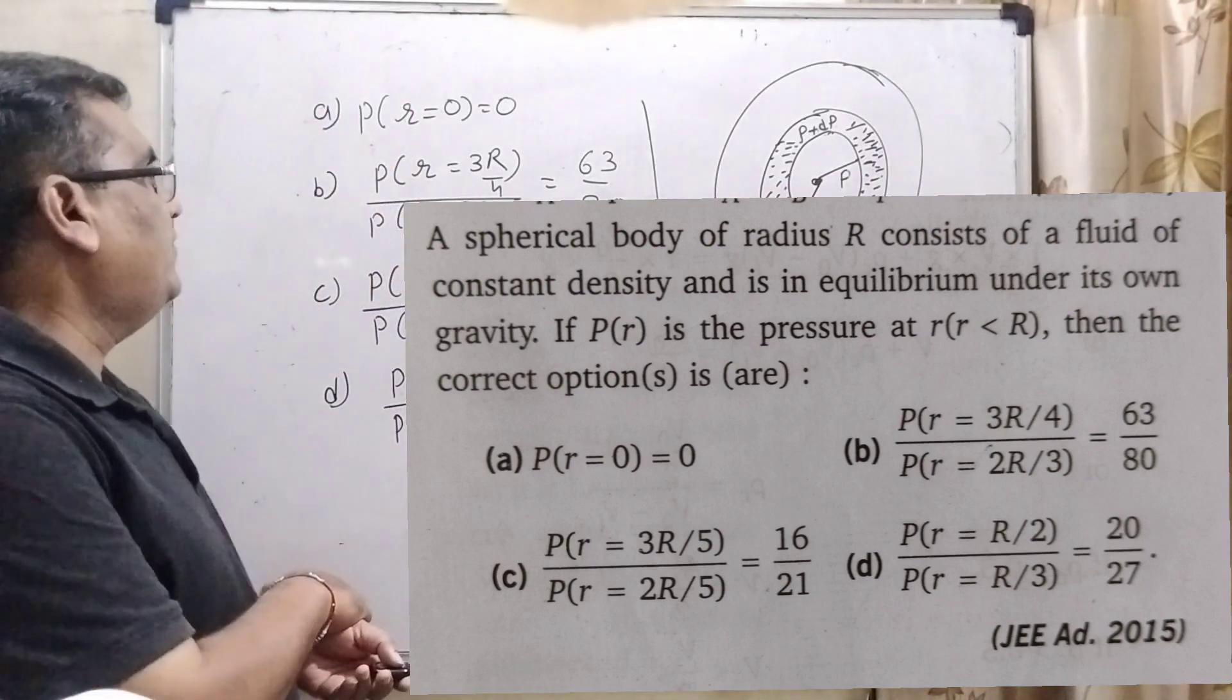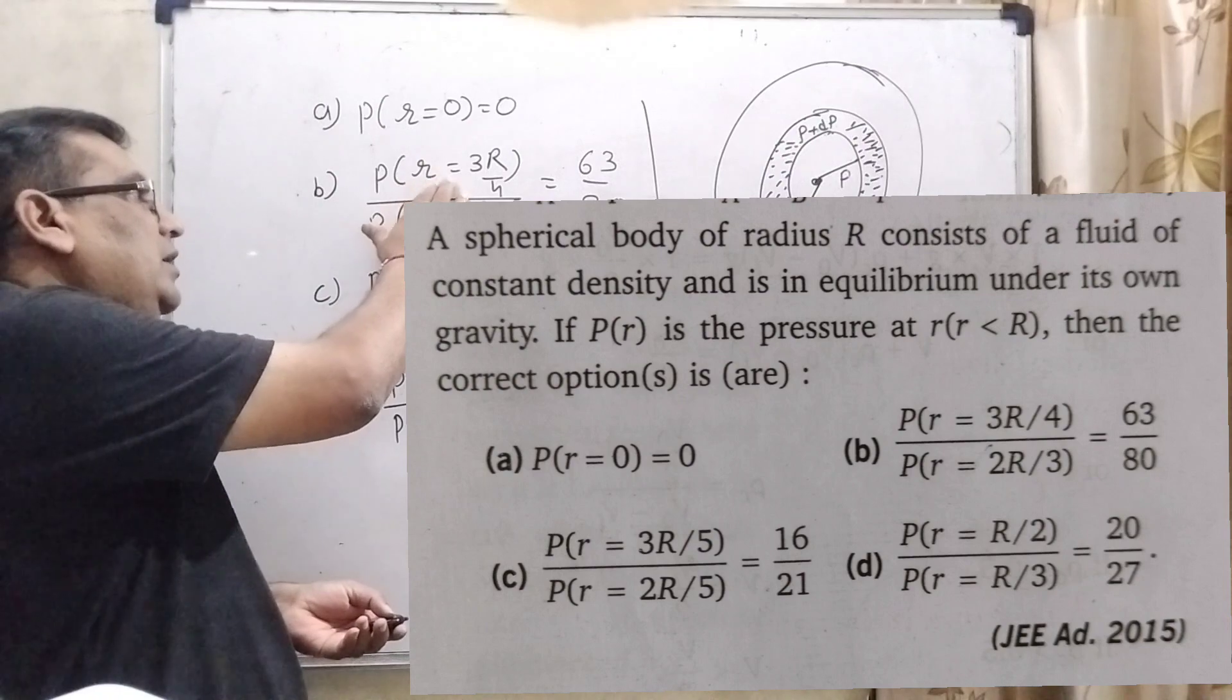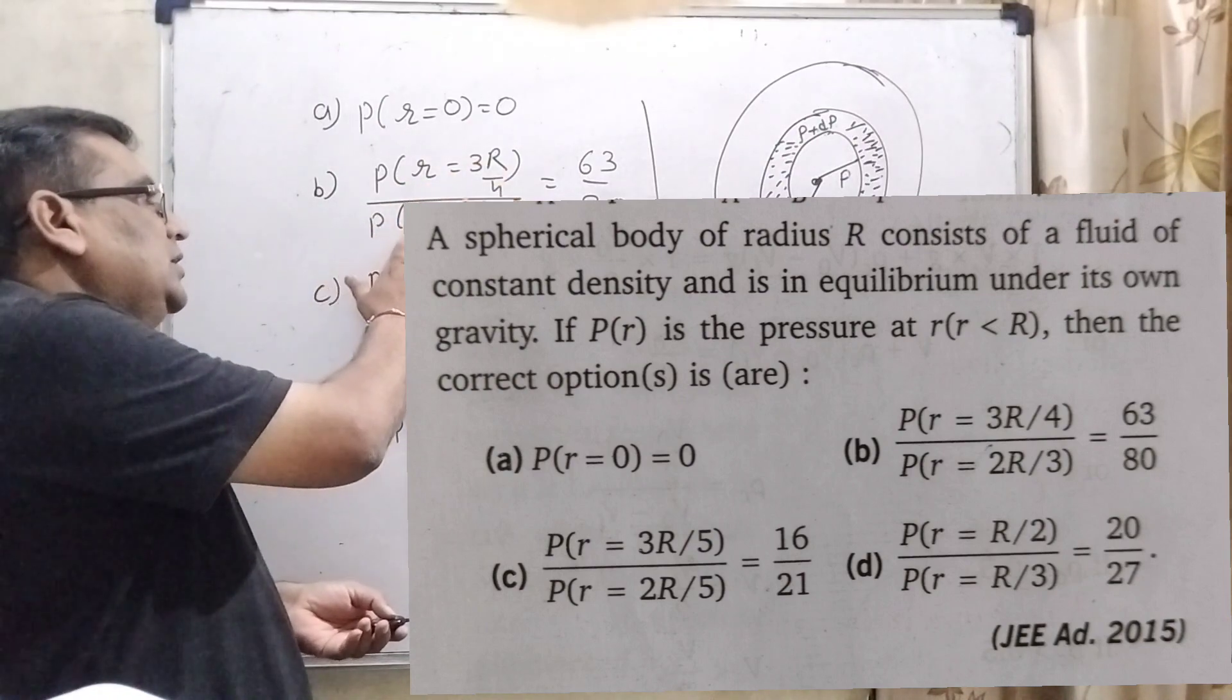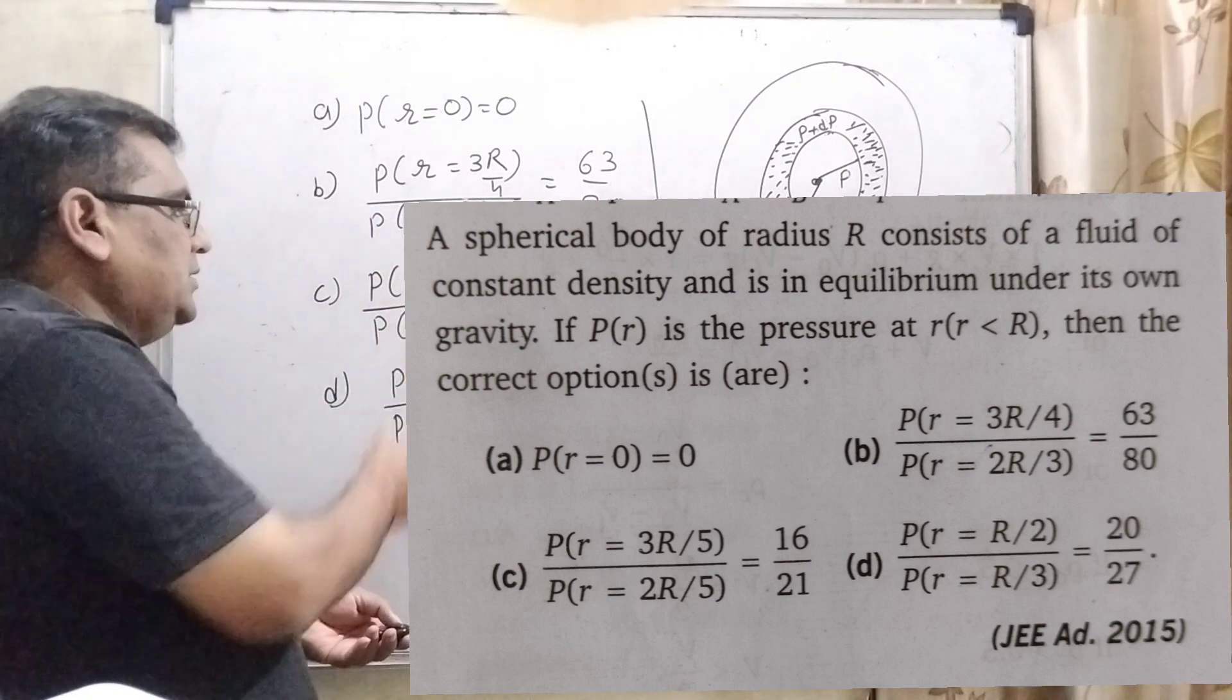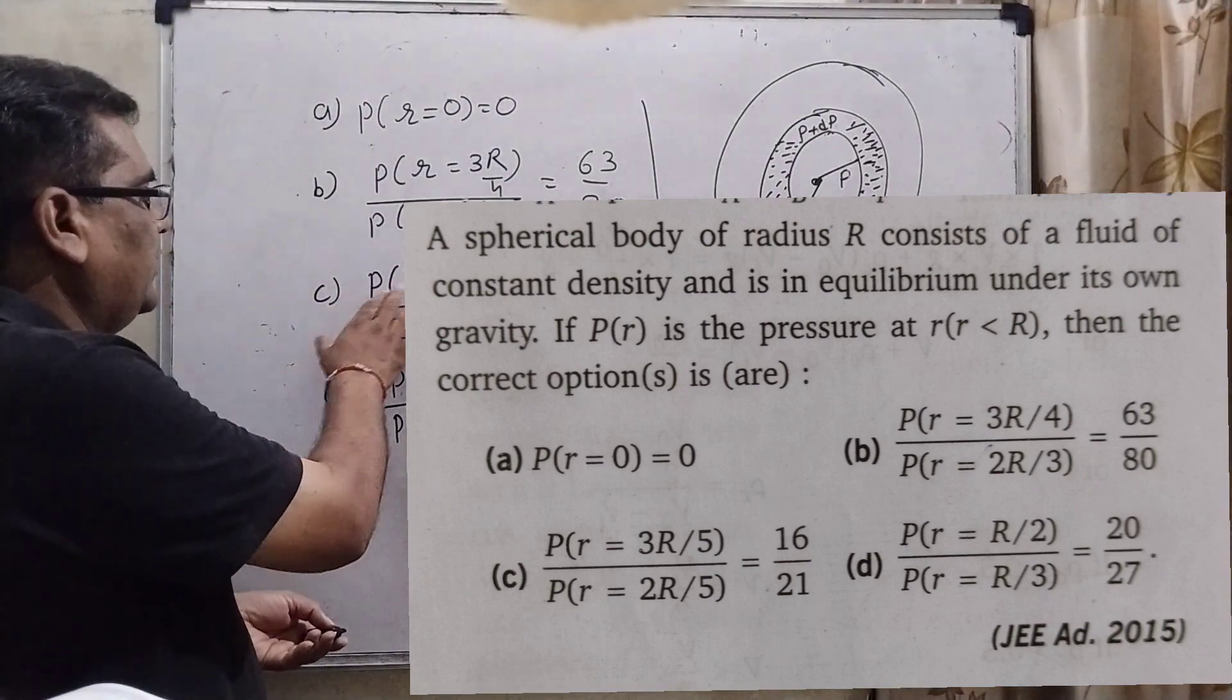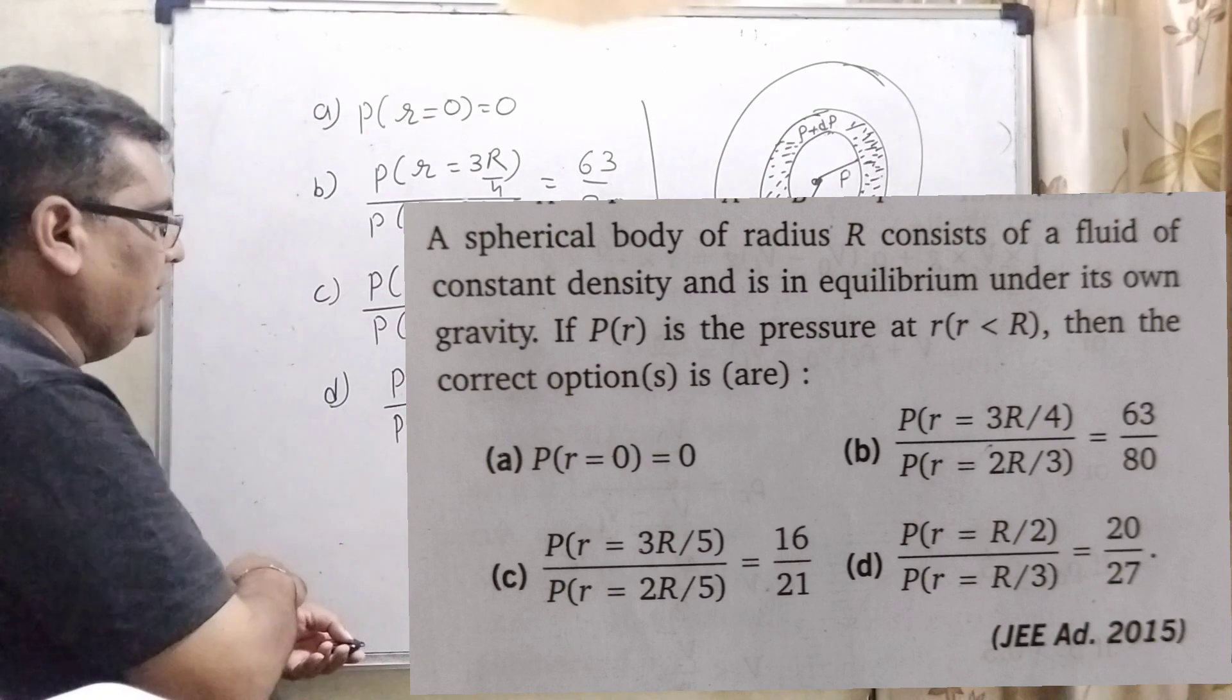Here we have given four options. Option A: P(r=0) equals 0. Option B: P(r=3R/4) upon P(r=2R/3) equals 63 by 80. And the same condition is given that C, P as a function of r equals 3R by 5 upon P as a function of r equals 3R by 5 is equal to 16 upon 21.